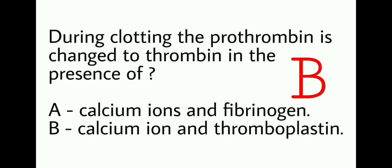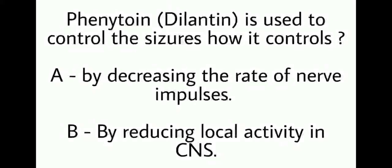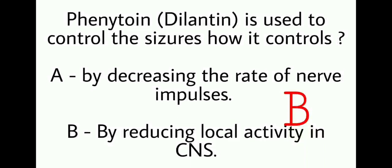You can take a screenshot of this slide for your revision purpose. Next, phenytoin is used to control seizures. How does it work? Options are: A) by decreasing the rate of nerve impulses, or B) by reducing local activity in the central nervous system. The right answer is option B — phenytoin controls seizures by reducing local activity in the central nervous system.